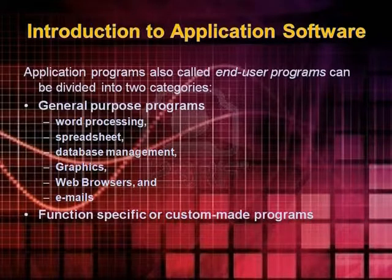Now we come to the introduction to application software. You have the computer and have studied the hardware part — now you need something to run it. The software plays the role of the driver. Application software is of two types: general purpose software and function specific software. General purpose software is like Microsoft Word, which serves many purposes such as word processing, spreadsheets, database management, graphics, web browsers, and email.